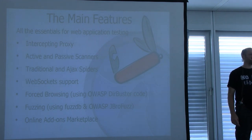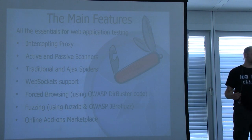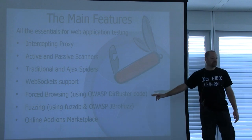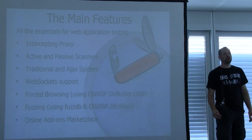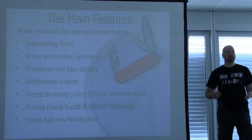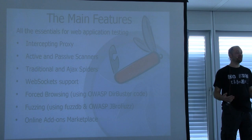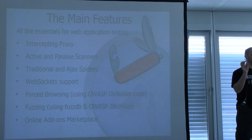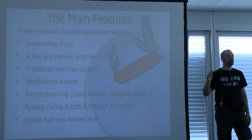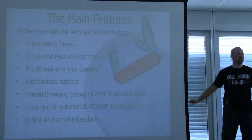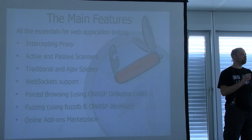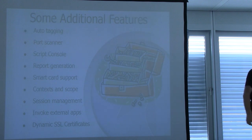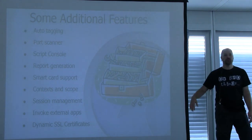Main features: it's a security tool with a proxy, active and passive scanners, and spiders. One thing I want to stress is the online add-on marketplace — ZAP has an option to check for updates and you'll get told when there are updates. There's a button that takes you to the marketplace where you can download new add-ons and get alerted when they're updated. There's a whole range of great add-ons which allow you to extend ZAP in lots of different ways.